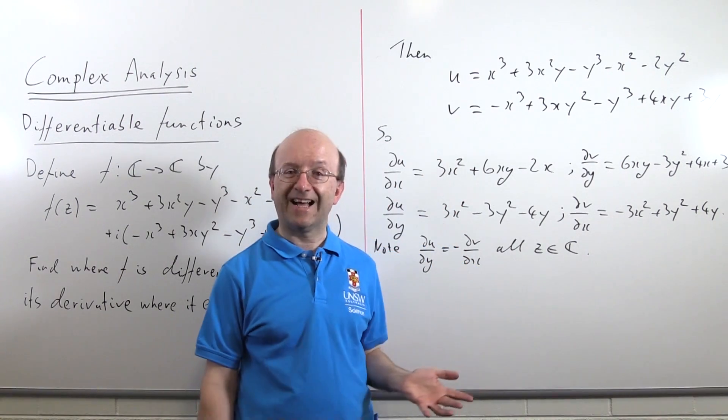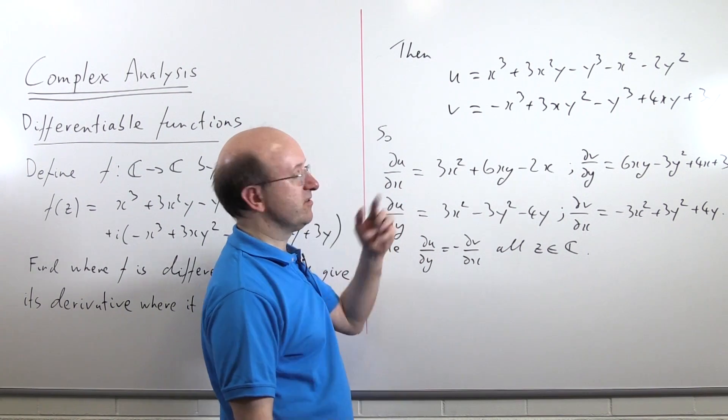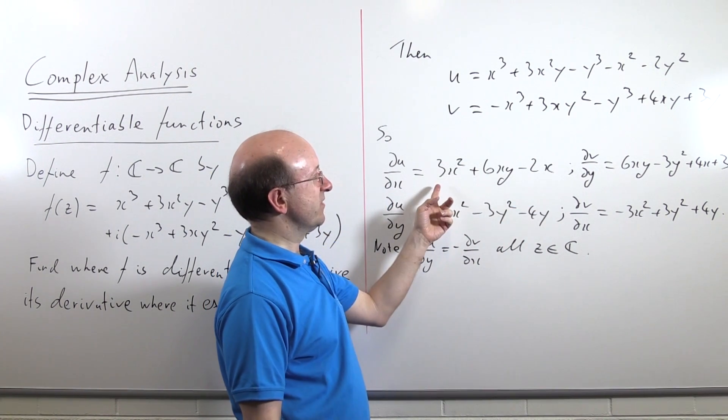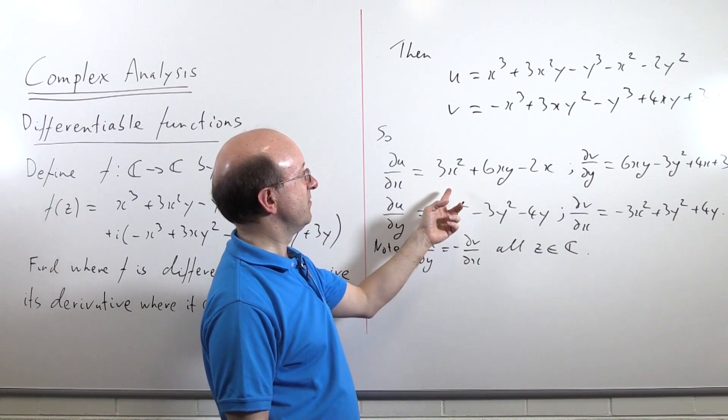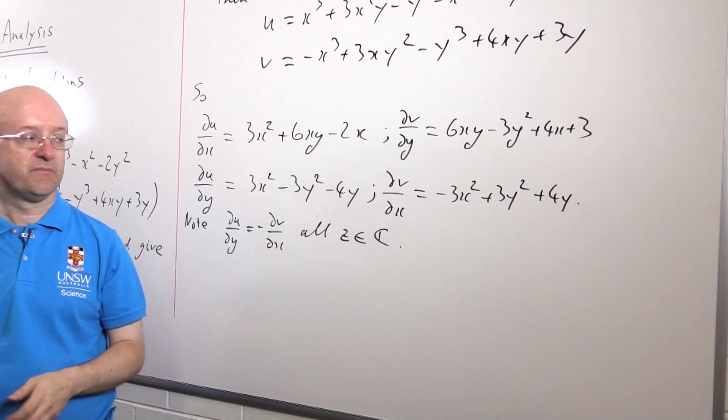So, now we need to look at the other Cauchy-Riemann equation, du dx equals dv dy. And this is one of the reasons why I like to write these equations in this shape, because they're side by side, so we can compare them immediately. We can see the 6xy's cancel off, but the others don't.